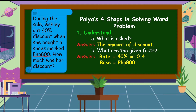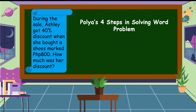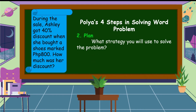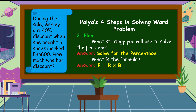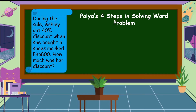We already understand the problem. The next step is to plan. In the given facts, we have 40% as our rate and 800 pesos as our base. So we're going to solve for the percentage. The formula is: percentage is equal to rate times base. We have already the plan, so now let's carry out the plan and solve the problem. Percentage equals rate times base.